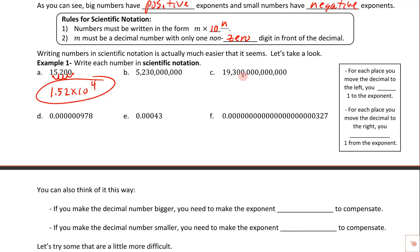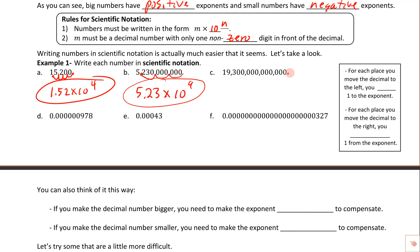For the next big number, the decimal is at the end and we count nine places, giving us 5.23 times 10 to the ninth — positive because it's a large number. For the third number, counting in threes using commas: three, six, nine, twelve, and one more — thirteen places total. So this is 1.93 times 10 to the positive 13th.